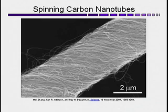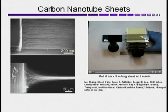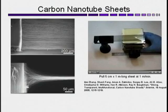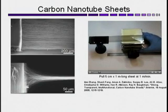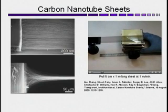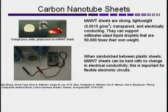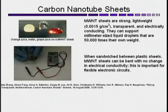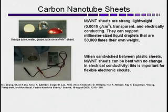The same researchers have also experimented in pulling carbon nanotubes into sheets. Here we see a transparent carbon nanotube sheet a whole meter long being created. Such sheets are strong and lightweight and transparent and electrically conducting. They can support 50,000 times their own weight.